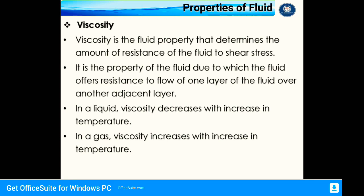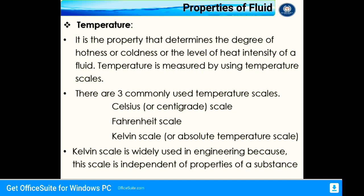In a liquid, viscosity decreases with increasing temperature, whereas in a gas, viscosity increases with increasing temperature. The next property is temperature, which determines the degree of hotness or coldness — the level of heat intensity of a fluid. Temperature is measured using temperature scales. There are three commonly used scales: the Celsius or centigrade scale, the Fahrenheit scale, and the Kelvin or absolute temperature scale. Among these, the Kelvin scale is widely used in engineering because it is independent of the properties of substances.